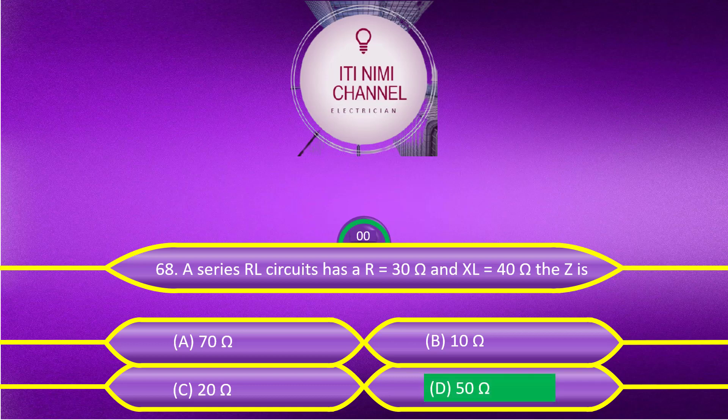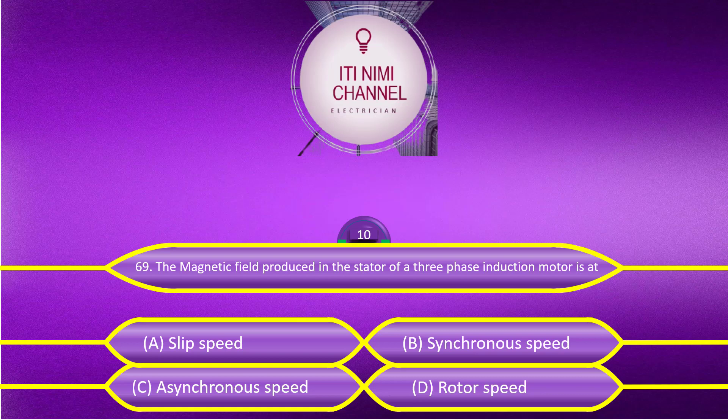The magnetic field produced in the stator of a three-phase induction motor rotates at: Option A, slip speed; Option B, synchronous speed; Option C, asynchronous speed; Option D, rotor speed. The answer is Option B, synchronous speed.